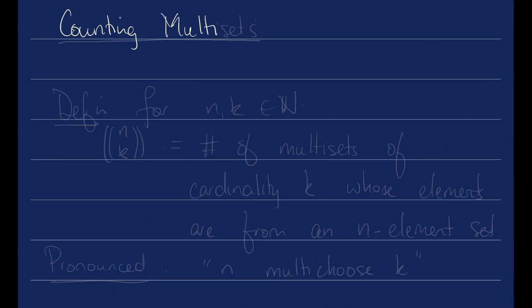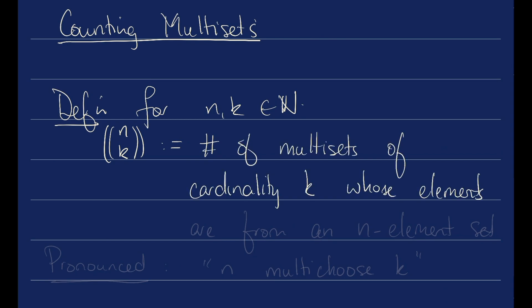Now let's talk about how to count multi-sets. For two natural numbers n and k, n k with double parentheses around them is defined to be the number of multi-sets of cardinality k whose elements are from an n-element set. And this is pronounced n multi-choose k.